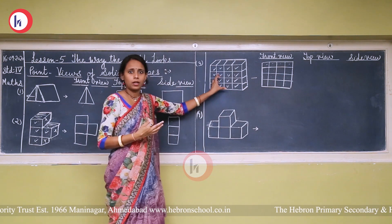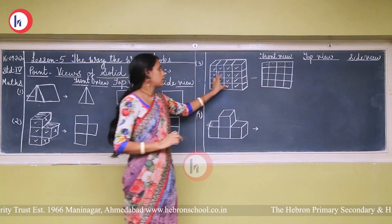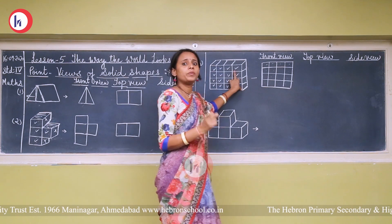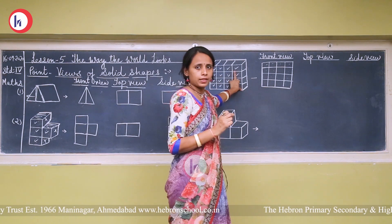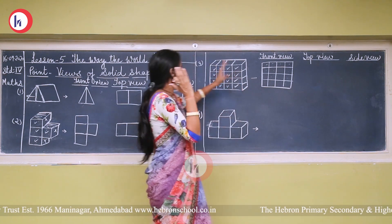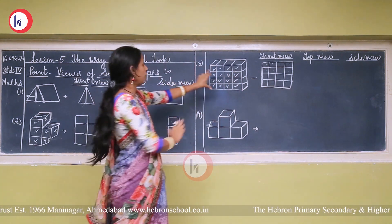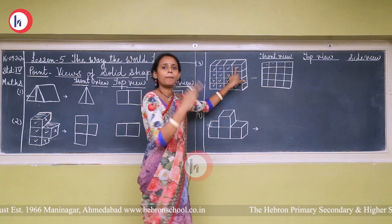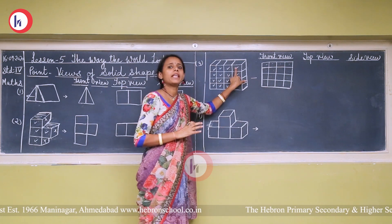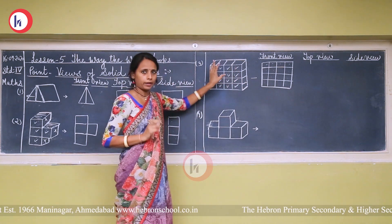Why am I saying 'square' here? Because in a cube there are 6 faces, but whenever we see from one side only, we can see one face. So I am calling it a square.